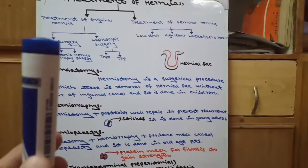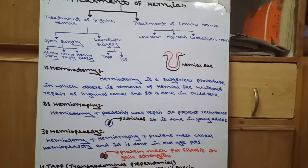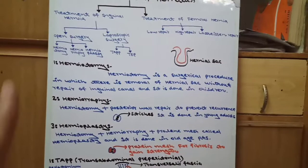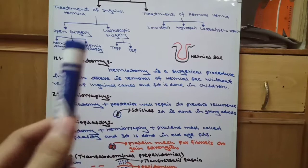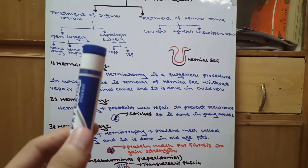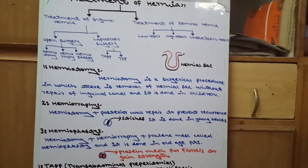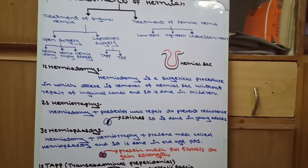Treatment of inguinal hernia has two approaches: open surgery and laparoscopic surgery. Open surgery has maximum invasion but it is easy. Laparoscopic surgery has minimum invasion but is complex, requiring more skill because the surgery is not directly visible.